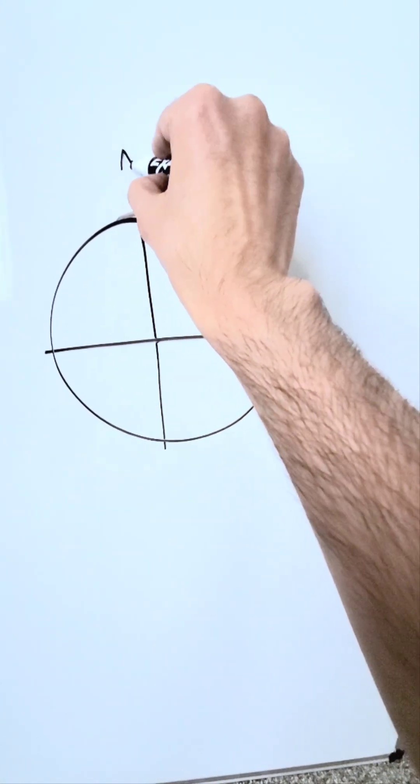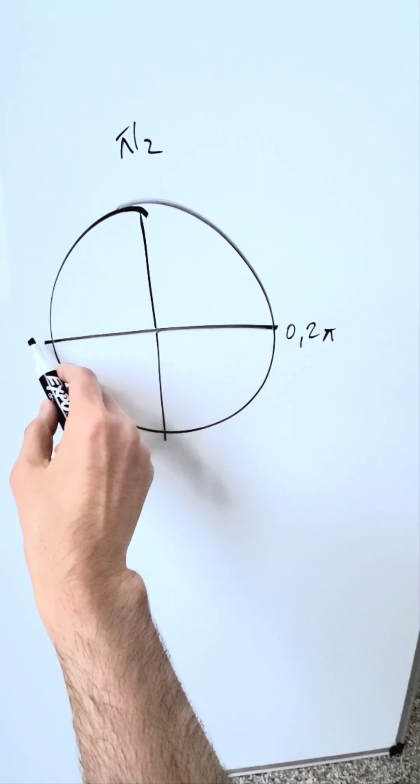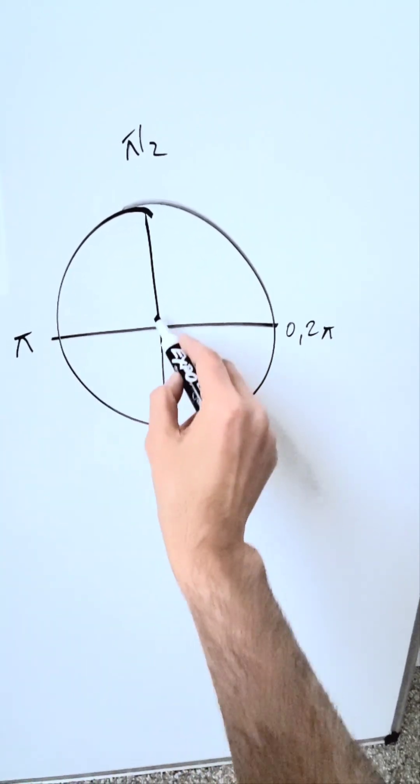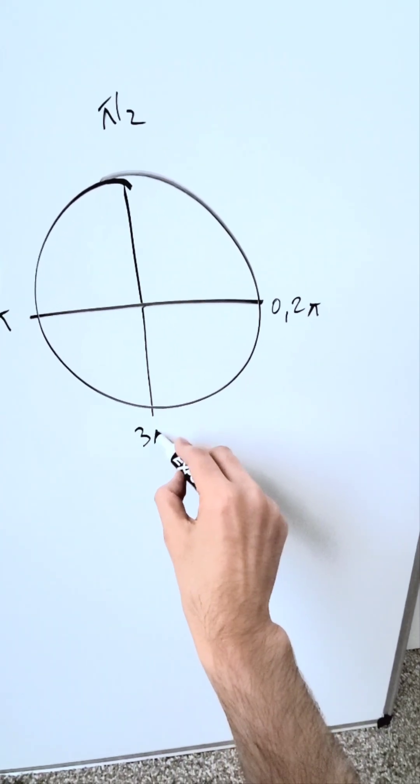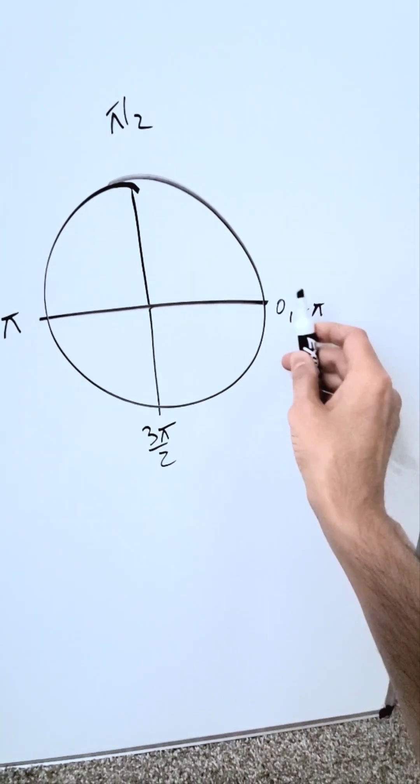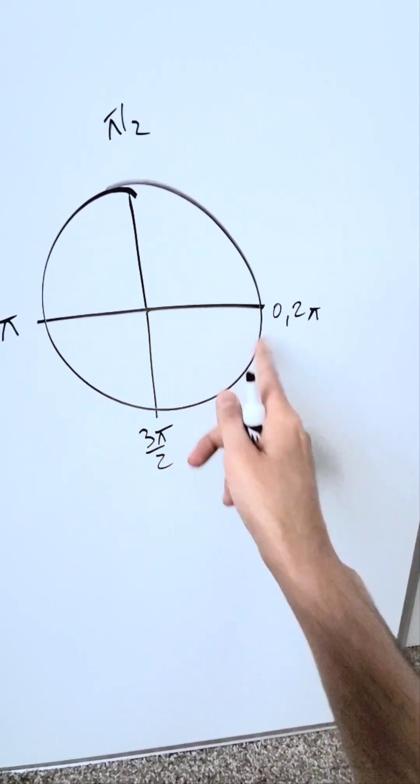Here, I have 90, which is π over 2. Across here, I have π, 180. Down here, 270 will be 3π over 2. Notice how these show up on the axis or in the quadrants.